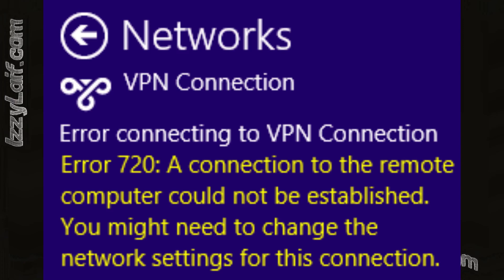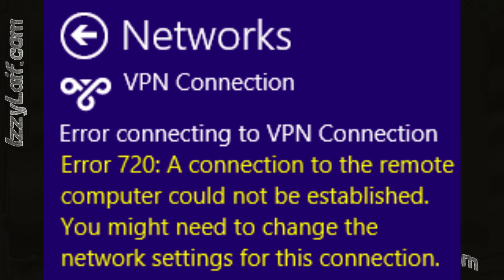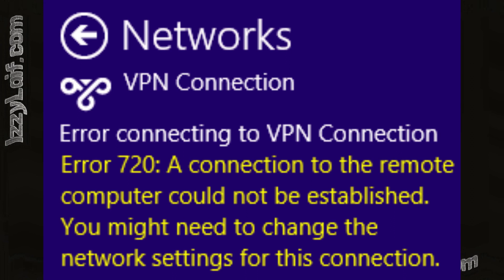Yesterday your VPN connection was working just fine. However, today, when you try to connect to the same connection, you get an error. Error 720: a connection to the remote computer could not be established. You might need to change the network settings for this connection.